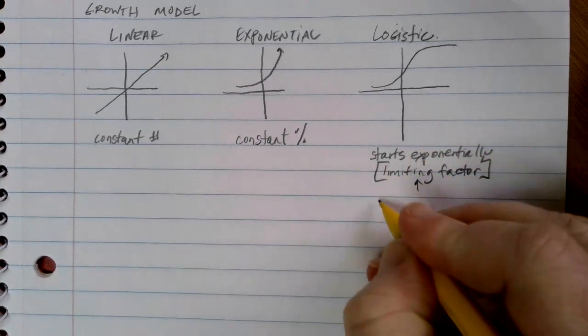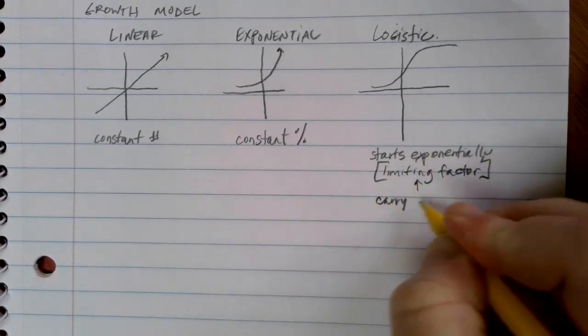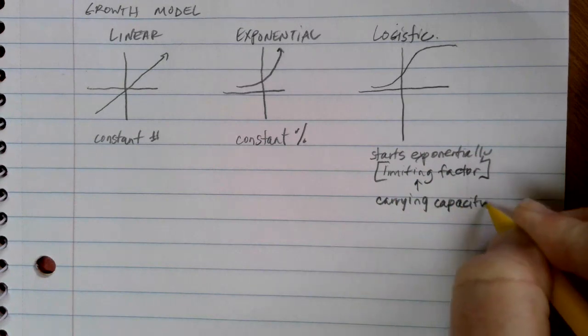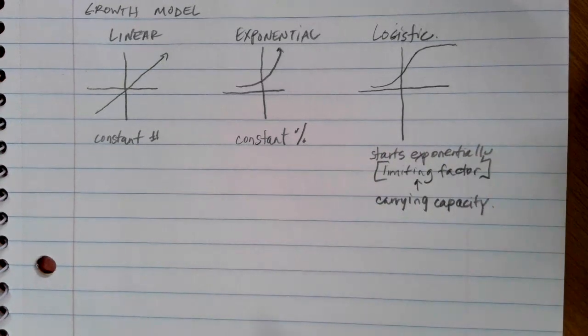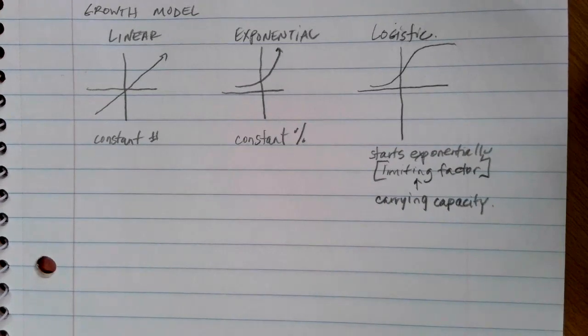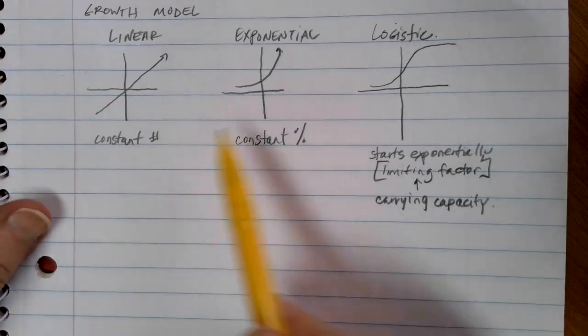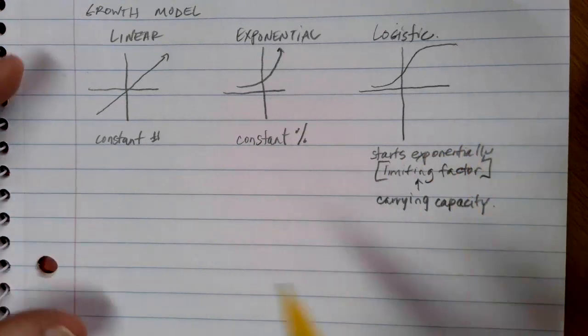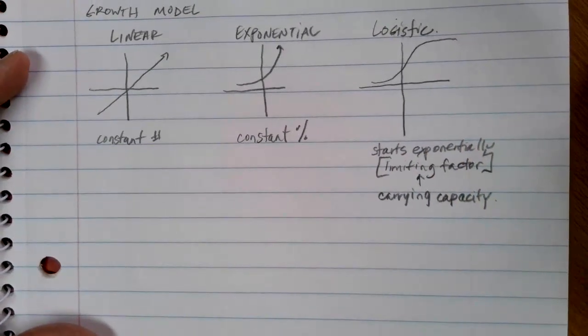But what really defines that logistic equation is that there's some limiting upper boundary for our growth. In biology terms, and the ones that you'll see in a lot of texts, this is called the carrying capacity. It's how much the environment can hold before it can't really do any additional growth. So just like all of our other growth models, there is a specific type of an equation that we can use for logistic growth models.